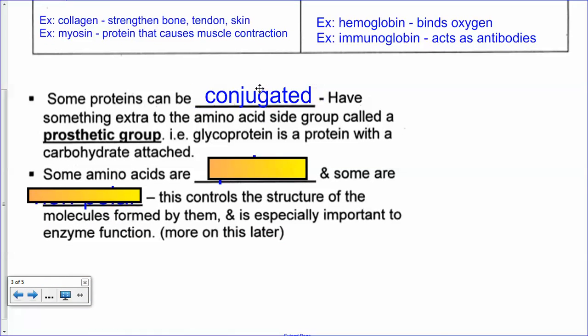Some proteins can join with other things. A glycoprotein is a protein that's connected to a bit of carbohydrate. That extra bit is called a prosthetic group, and they're considered conjugated proteins because they're attached to something else. We're going to see that this is more important later.